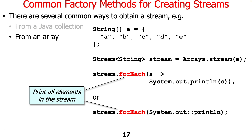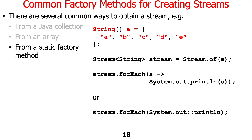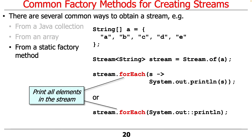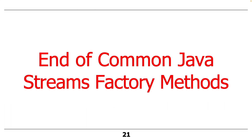You could also use the static factory method defined on Stream called Stream.of(). You can say Stream.of() and give it your array to get a stream, then print it out using either lambda expressions or method references. That wraps up the discussion of the most common Java streams factory methods — these are the ones you need to know, and you'll get to use some of them in your upcoming programming assignments.